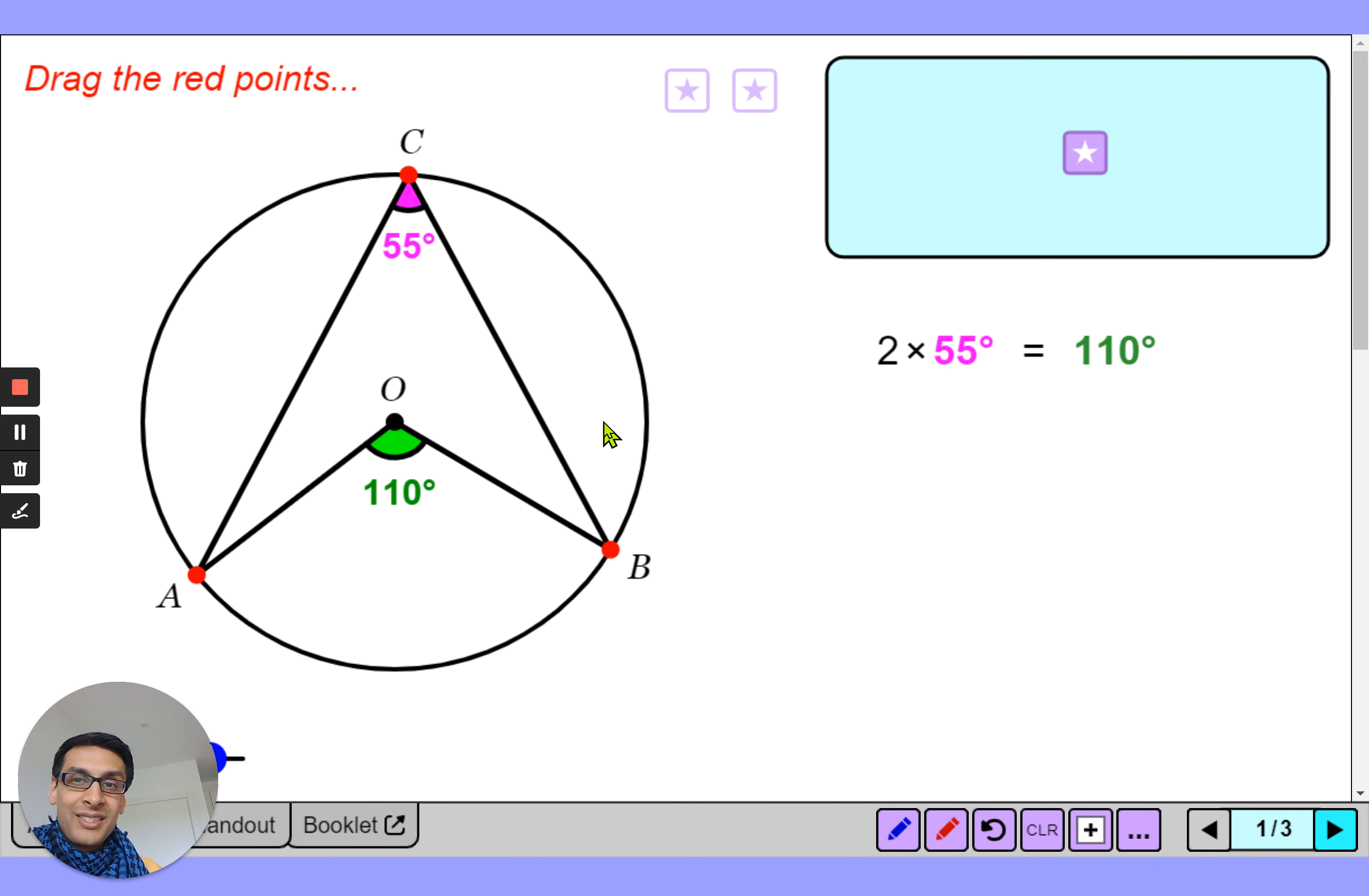What you may also have noticed here is if I make this 180 degrees, this actually is the theorem that we just looked at, the first theorem. So technically the first theorem I showed you, angles in a semicircle, happens to be a special case of this theorem but at GCSE level we consider that a separate theorem just because it comes up so frequently.